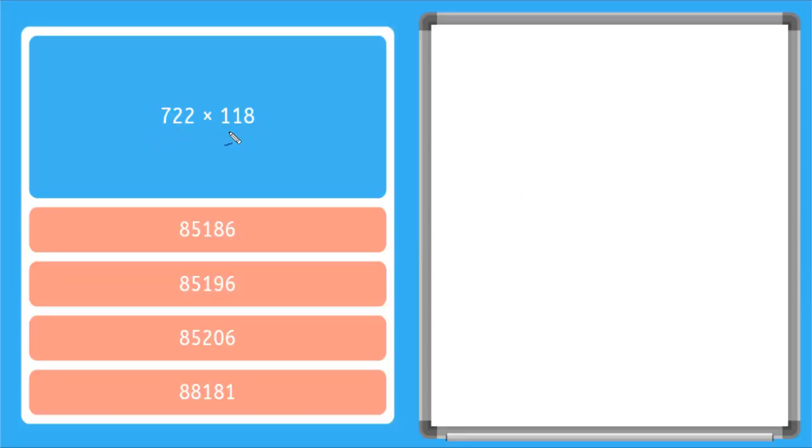So you'll see here I have two three-digit numbers that I'm multiplying. The first thing I'm going to do is take this horizontal expression here and write it vertically. So I have 722 times 118 equals.